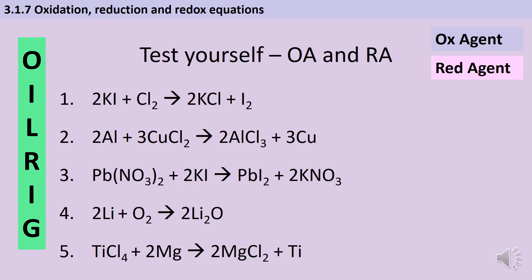Here's an opportunity to pause the video and make sure you're confident identifying oxidising agents and reducing agents. For each question you're looking for a single species — either an element or an ion — which is gaining or losing electrons. If you are looking at an ion then you need to make sure you put down the charge of that ion; you don't just treat it as an element on its own. Pause the video and make sure you can do these five questions.